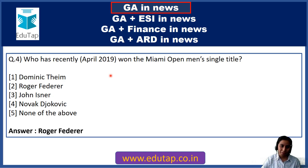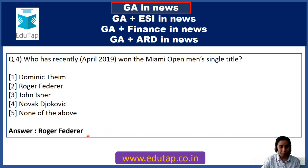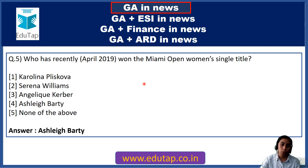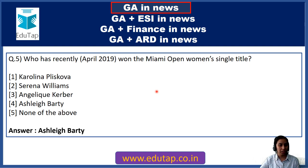Question 4: Who has recently won the Miami Open men's singles title? The options include Dominic Thiem and Roger Federer. The answer is Roger Federer, who won the Miami Open men's singles title. Question 5: Who has recently won the Miami Open women's singles title? Options are Carolina Pliskova, Serena Williams, Angelique Kerber, Ashleigh Barty, or none of the above. The answer is option 4, Ashleigh Barty. Now you know both the men's and women's champions of Miami Open 2019.